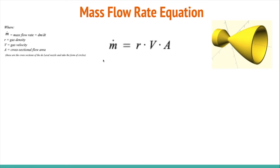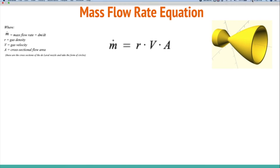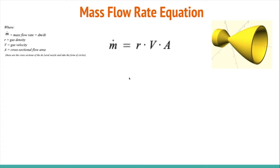We'll start with the mass flow rate equation, where m-dot equals the mass flow rate. Mass flow rate is a measure of air output in terms of volume per unit of time — don't confuse this with gas velocity, because unlike gas velocity, mass flow rate does not change because of the conservation of mass. Here, ρ is the gas density, v is gas velocity, and A is the cross-sectional flow area. A De Laval nozzle is essentially a cylinder, so the cross sections would be circular.